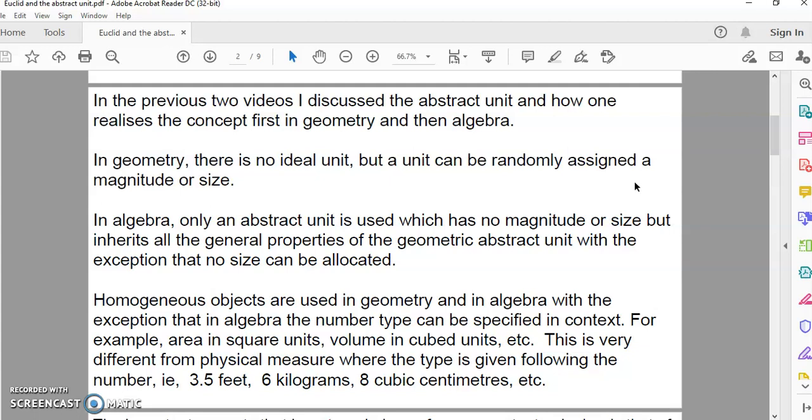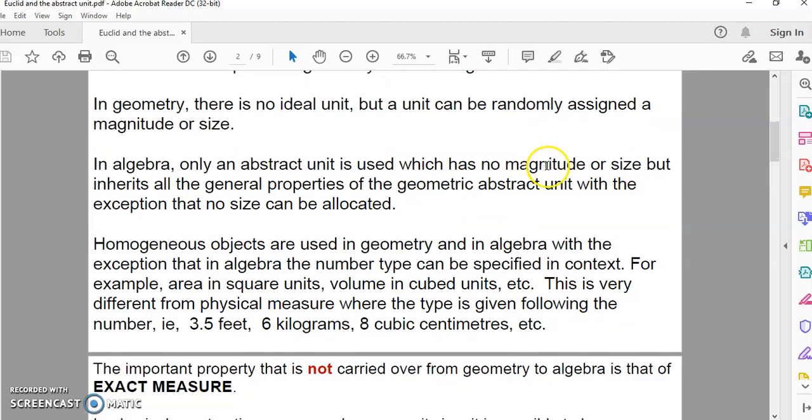Homogeneous objects are used in geometry and in algebra with the exception that the number type can be specified in context. For example, we talk about area in terms of number, but if we want to distinguish area from volume, we write square units after one number and cubic units after the other. This is very different from physical measure, where the type is given following the number, like three and a half feet, six kilograms, eight cubic centimeters.